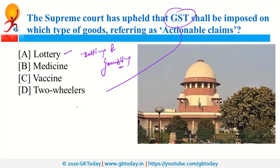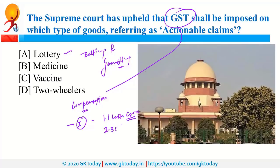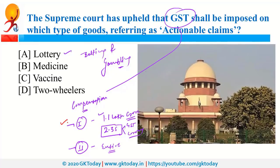Recently, GST was also in news because of the GST compensation issue. There was a shortfall in revenue collection, and to compensate that shortfall in GST revenue collection, the central government proposed two options. The first option was that states can borrow 1.1 lakh crore out of an estimated shortfall of 2.3 lakh crore — this total shortfall was due to both GST issues and COVID. The second option was that states can borrow the entire amount. Now, all 28 states and 3 union territories have opted for the first option, and Jharkhand was the last state to accept this offer.